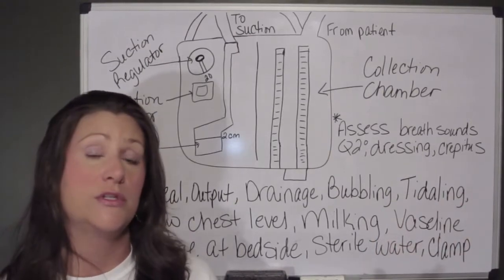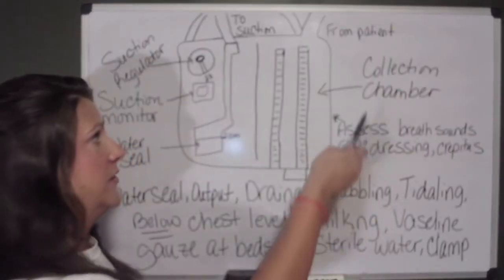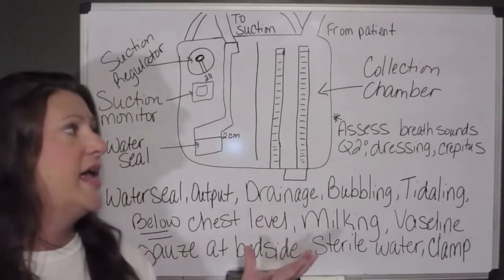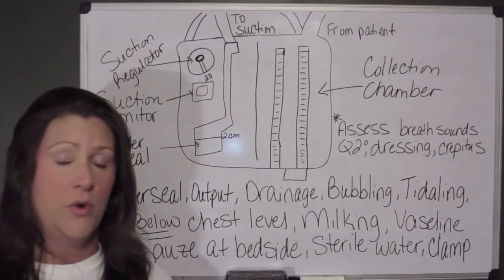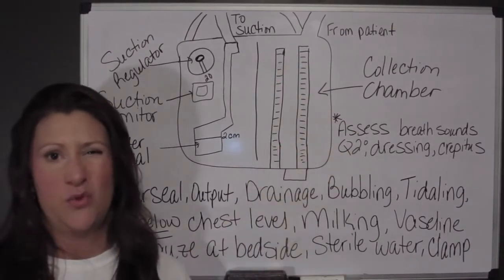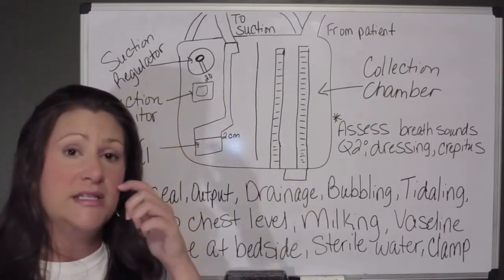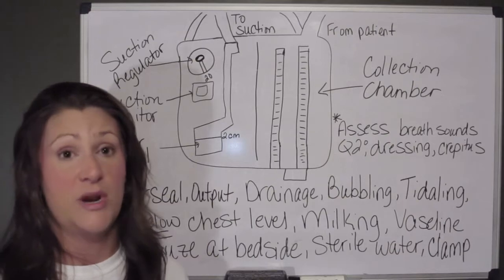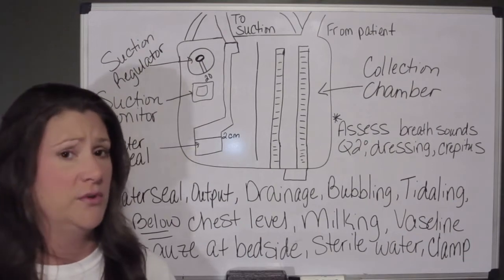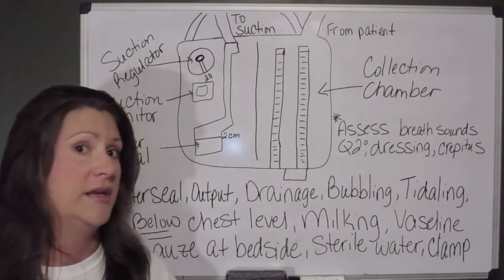Those holes are the part that's going to actually be allowing the air or the fluid to enter the tube and then come down into this part, which I've got labeled as the collection chamber. If your chest tube is being inserted for a pneumothorax, you're not going to see much by way of drainage in the collection chamber because you're just pulling off air. Upon initial insertion there might be some initial serosanguineous-type drainage, but nothing other than that. If you do start seeing a lot of fluid — especially sanguineous fluid for a pneumothorax — then something is not right and you need to alert the provider.